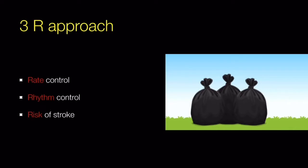Coming to the 3R approach of atrial fibrillation: the first R is rate control strategy, the second is rhythm control strategy, and the third is assessment of risk of stroke.